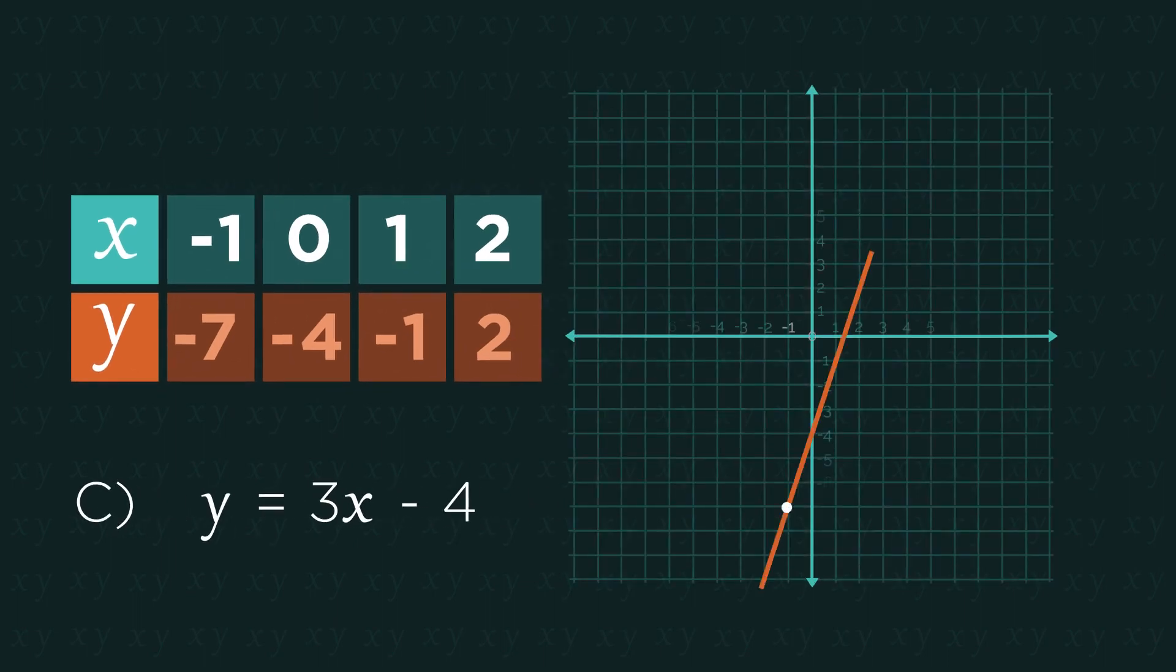We can then use these ordered pairs and plot them onto a graph which we'll look at in future videos.